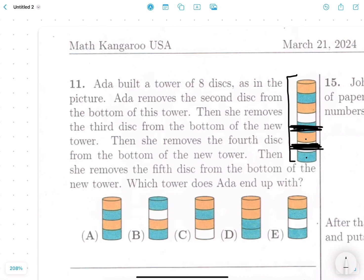So now she removes this disk over here. Then she removes the fourth disk from the bottom of the new tower. So let's count again. 1, 2, 3, 4. Okay, she's removing this one. And finally, she removes the fifth disk from the bottom of this ending tower that we have. 1, 2, 3, 4, 5. So she basically just removes the top one. What's left? So our remaining tower should have a blue disk on top, then a white disk, then an orange disk, and then a blue disk at the bottom.